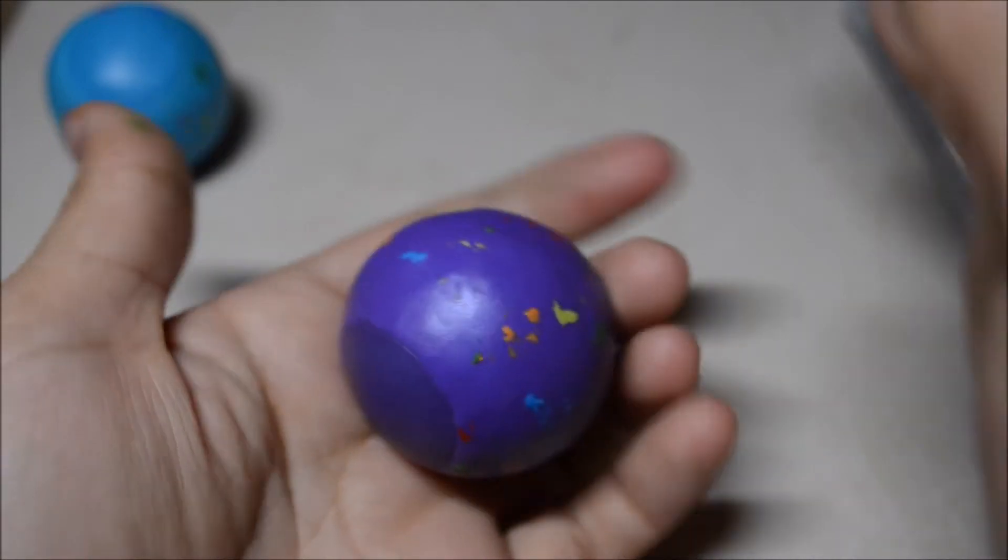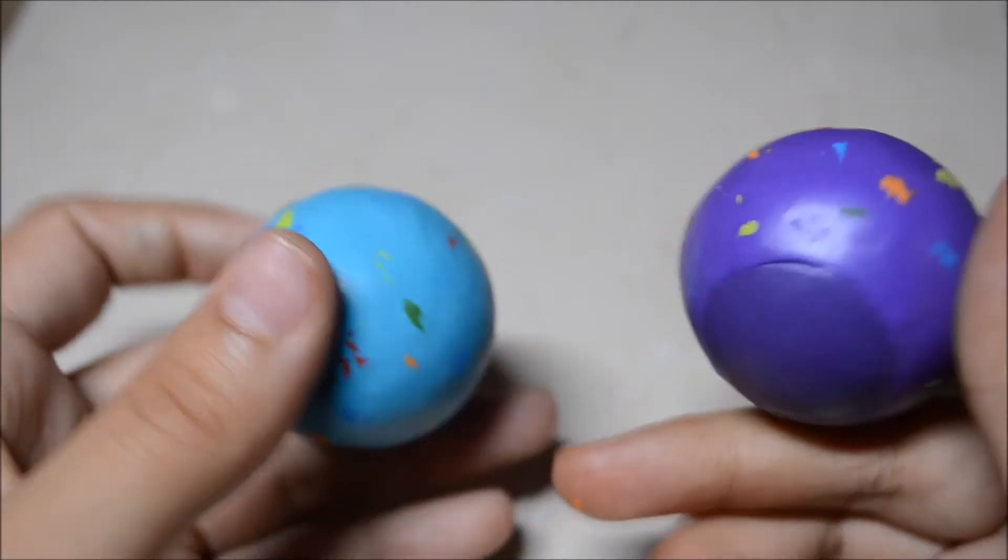When you're done with the speckling, just give it a light roll and you're good. Here they are both done. Now to bake.